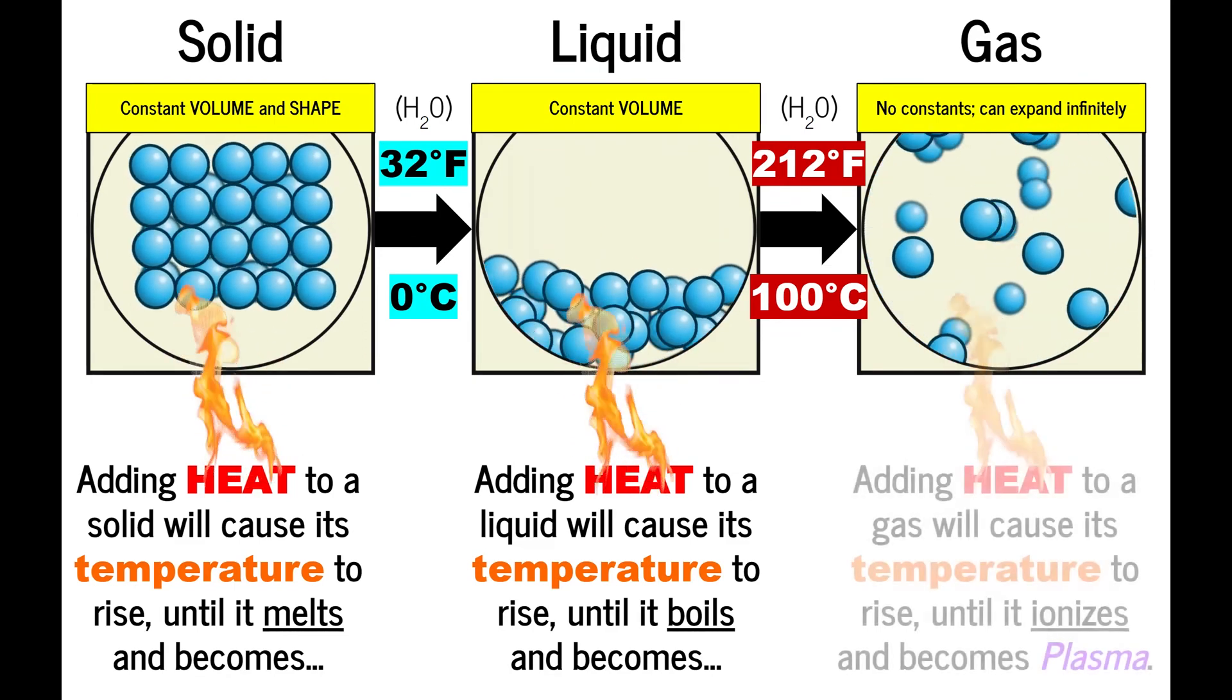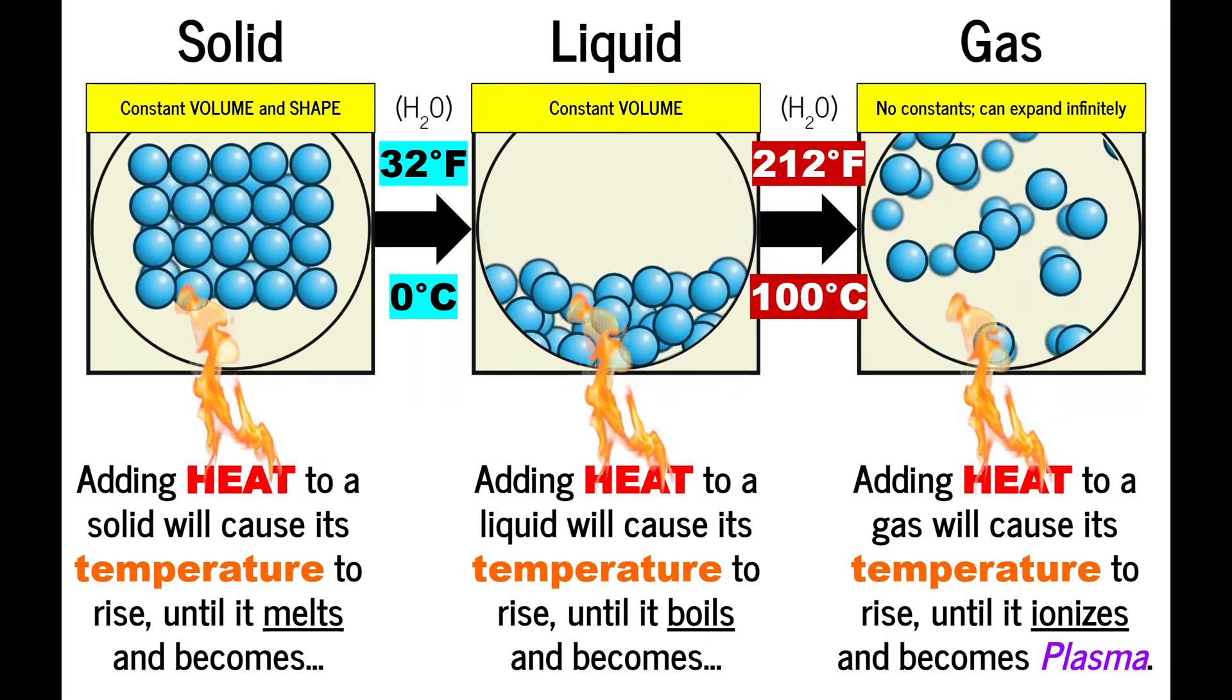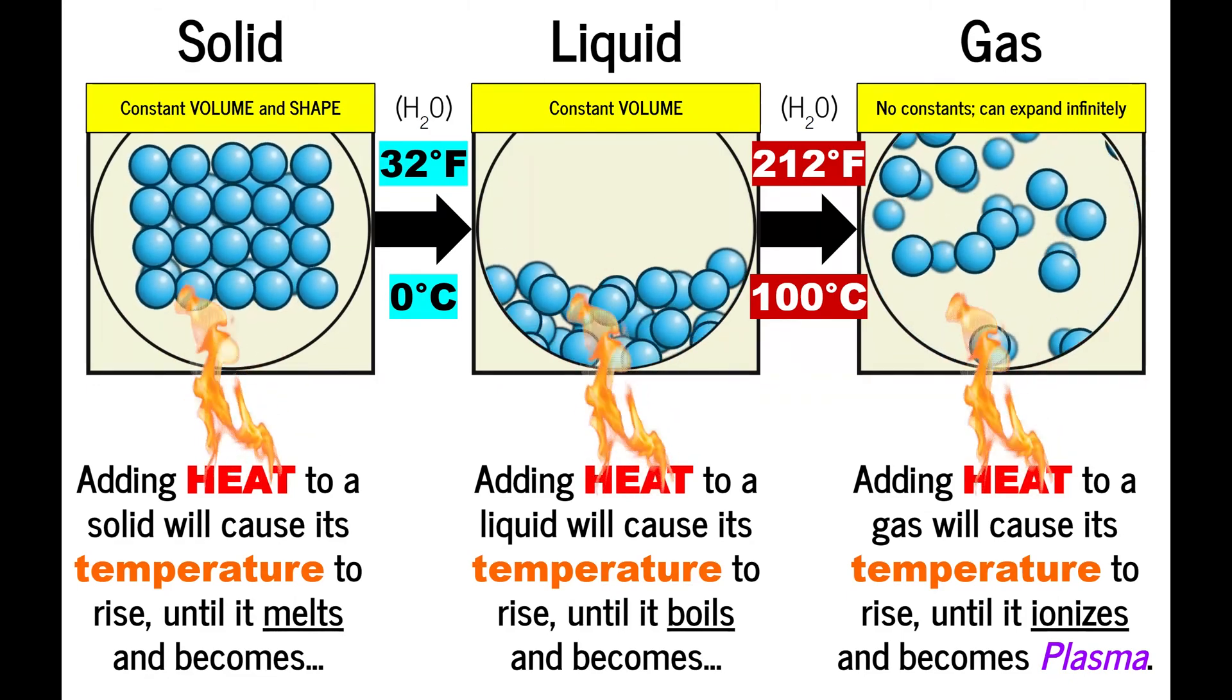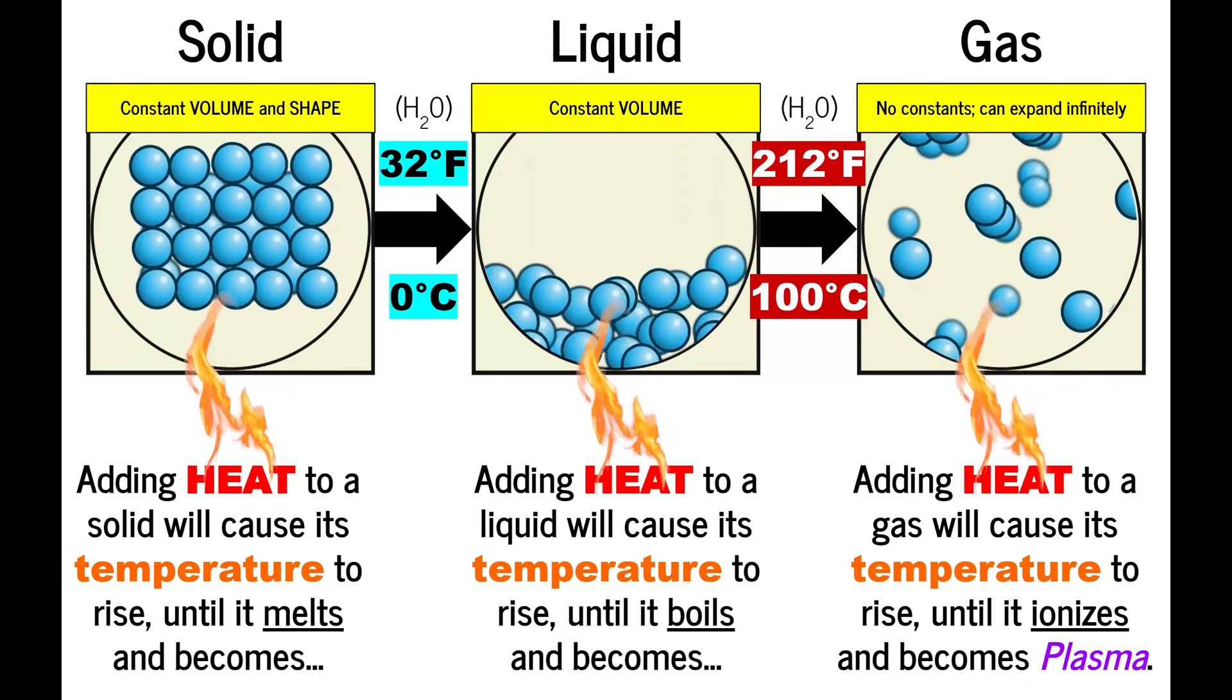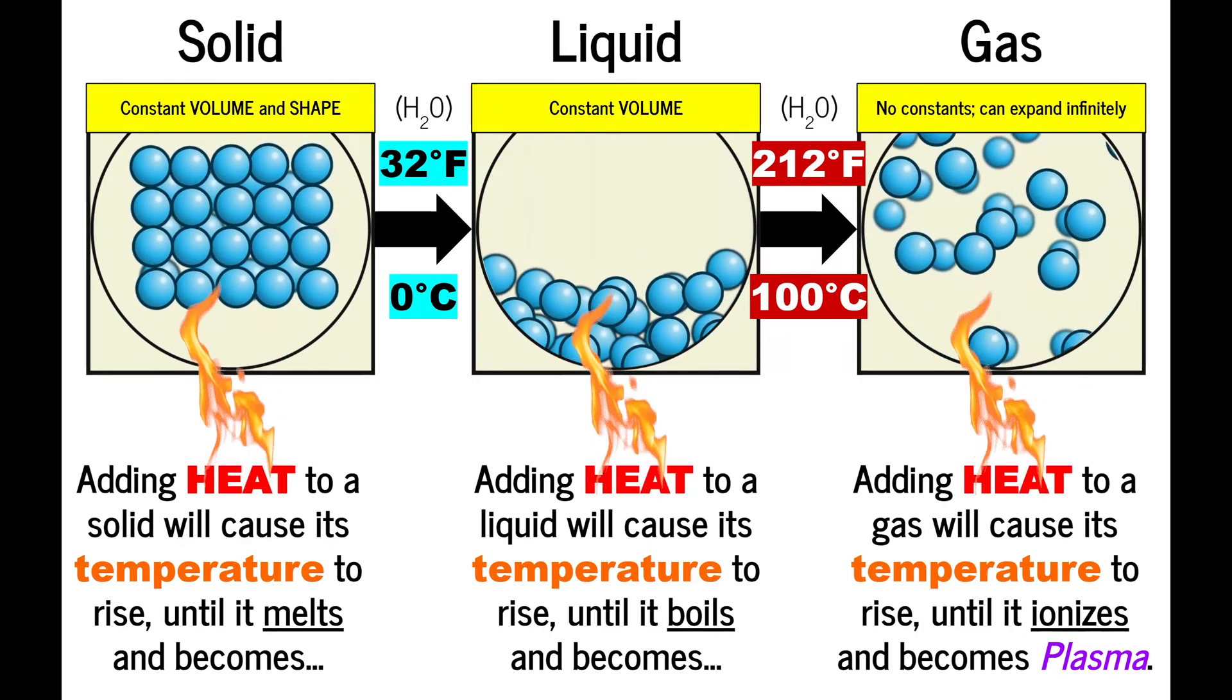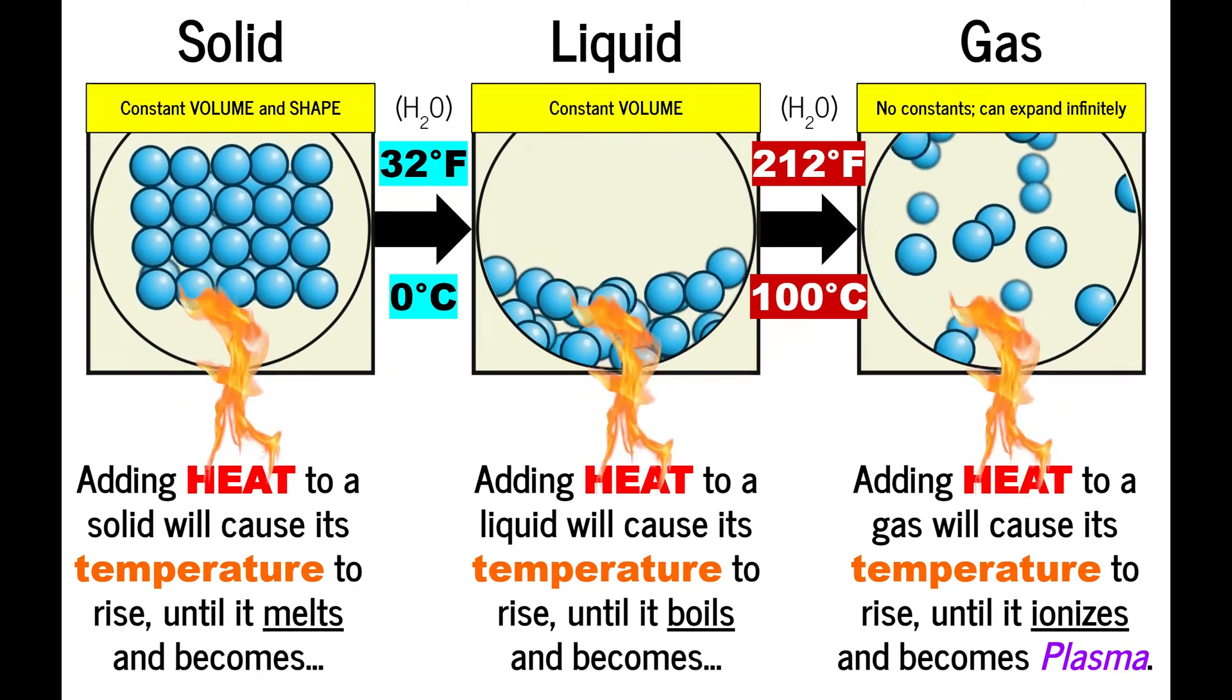The last note here is that if you add heat to a gas, it will cause its temperature to rise again until it ionizes and becomes a plasma. Plasma is the fourth state of matter, where individual molecules are so energetic that they rip themselves to pieces and form a soup of positively charged particles and negatively charged particles. This is very cool, but pretty advanced, and not the kind of thing you need to understand in our class, so you can feel free to google it.